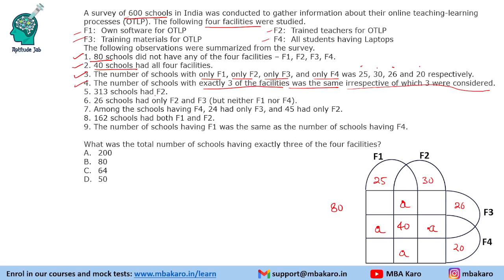313 schools had F2. So F2 is present in 313 schools total. Also, 26 schools had only F2 and F3 but neither F1 nor F4, so we fill in 26 for the region of only F2 and F3.